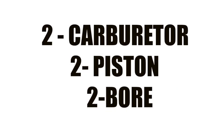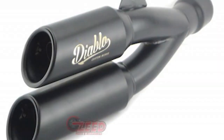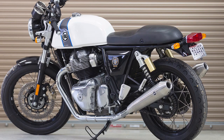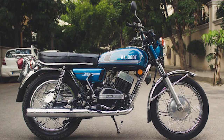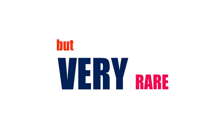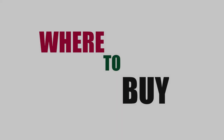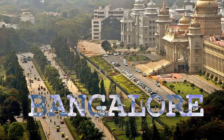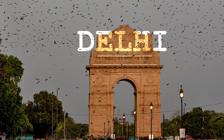This bike has two carburettors, two pistons, two bores, and it also has twin exhaust. If you want to talk about interceptors, you can compare using twin exhaust. Regarding spare parts, they are very rare. You can find some original spare parts in Bangalore and in a few other places.